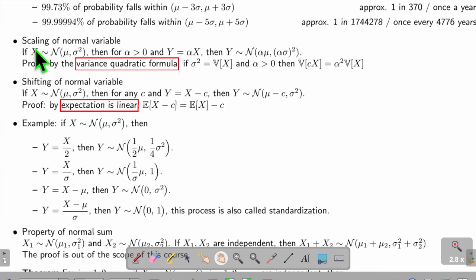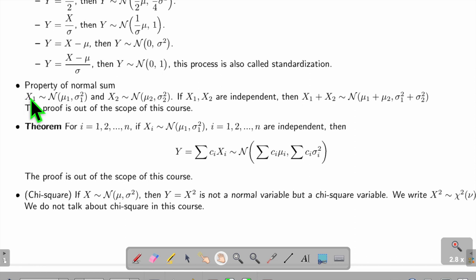For a normal random variable X under this distribution, if we scale X by α (let Y = αX), then Y will be under this distribution. If we shift the normal random variable by constant c and call this Y, then for the mean we subtract c.